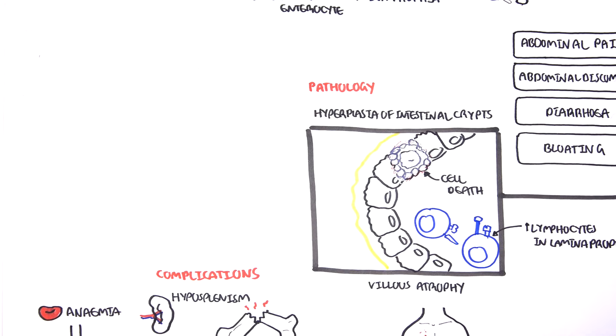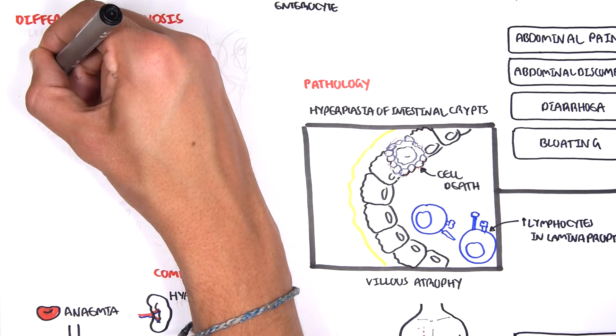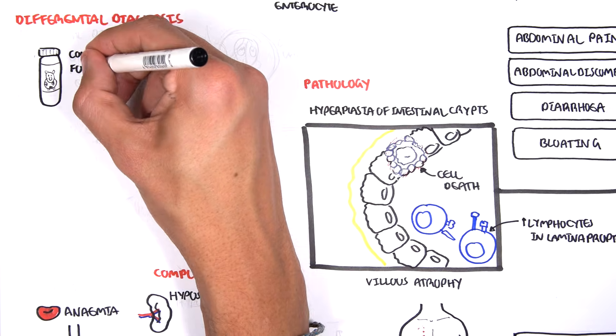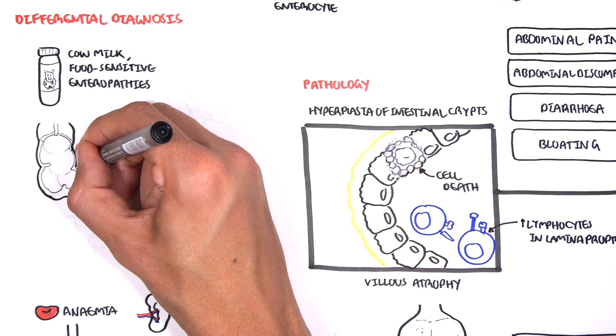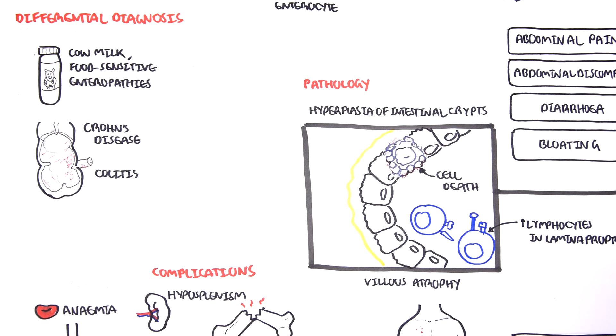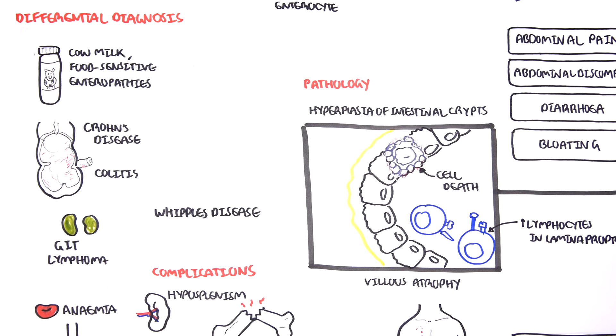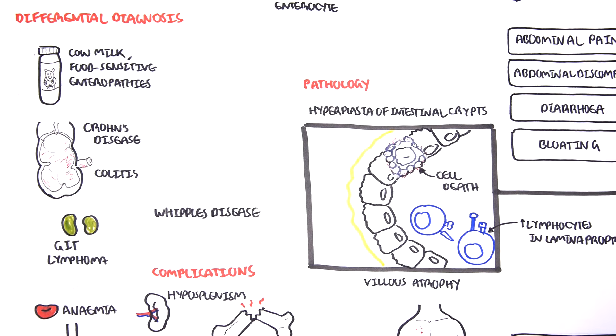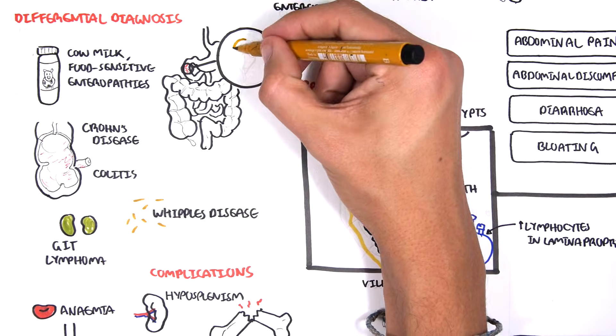Differential diagnoses of celiac disease include cow milk sensitivity, food sensitive enteropathies, Crohn's disease, colitis, GIT lymphoma, Whipple's disease, and Giardia lamblia infection.